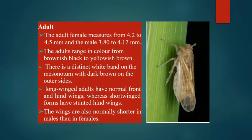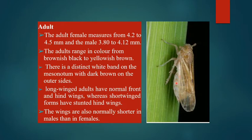The adult female measures 4.2 to 4.5 mm and the male 3.80 to 4.12 mm. Adults range in color from brownish black to yellowish brown, with a distinct white band on the mesonotum with dark brown on the outer sides. Long-winged forms have normal hind wings whereas short-winged forms have stunted hind wings; wings are normally shorter in males than in females.